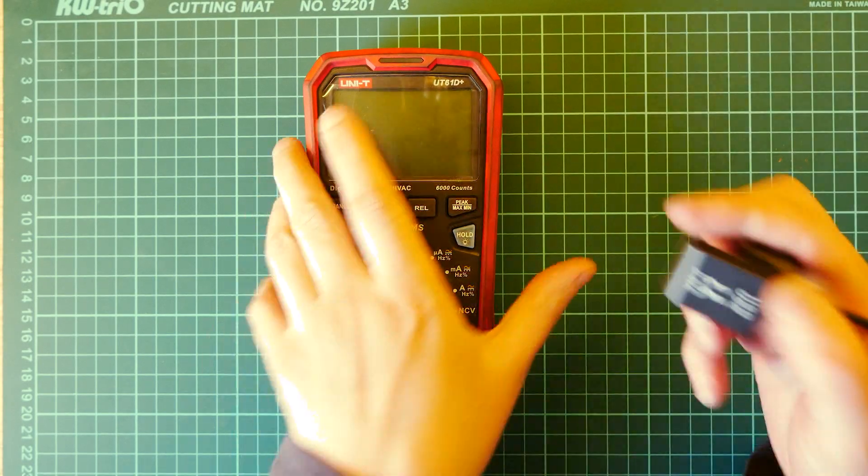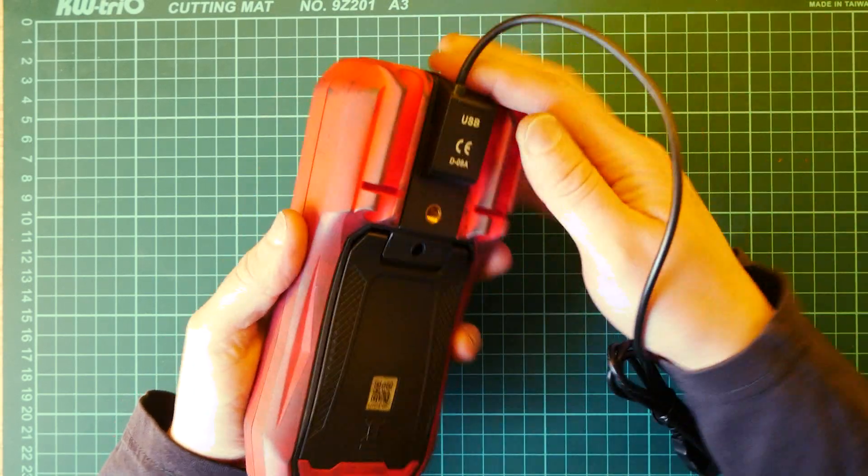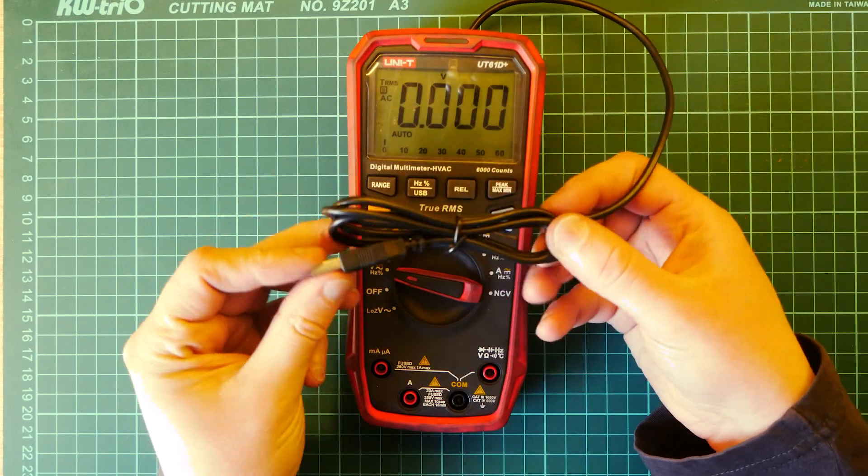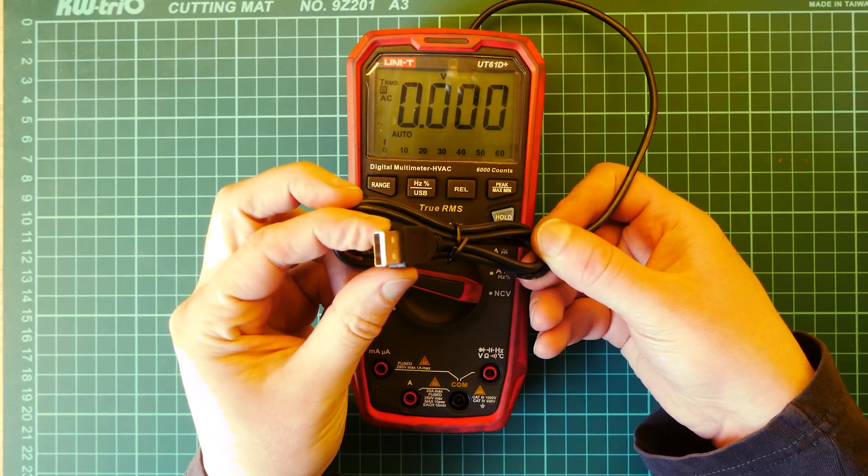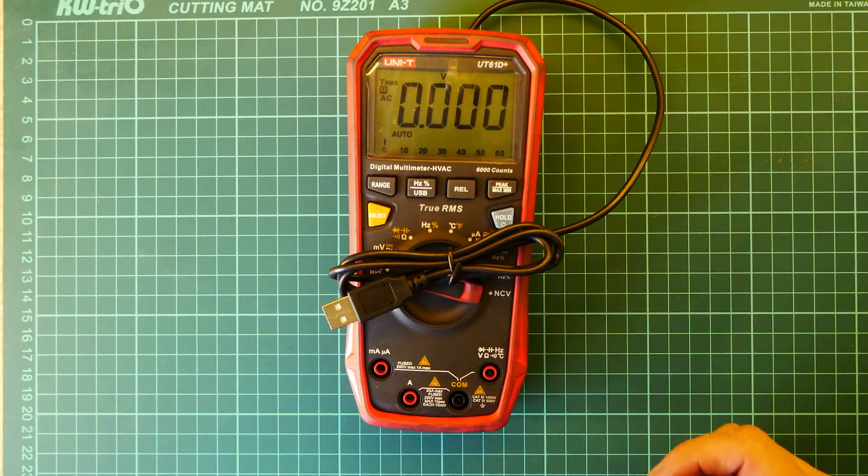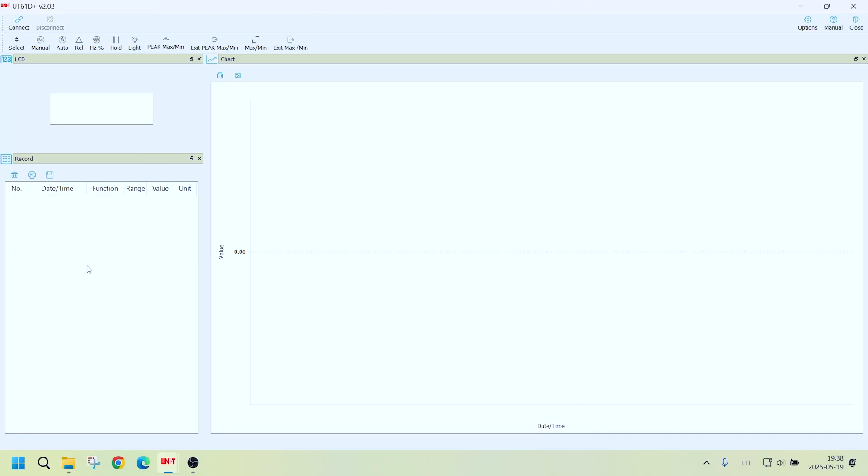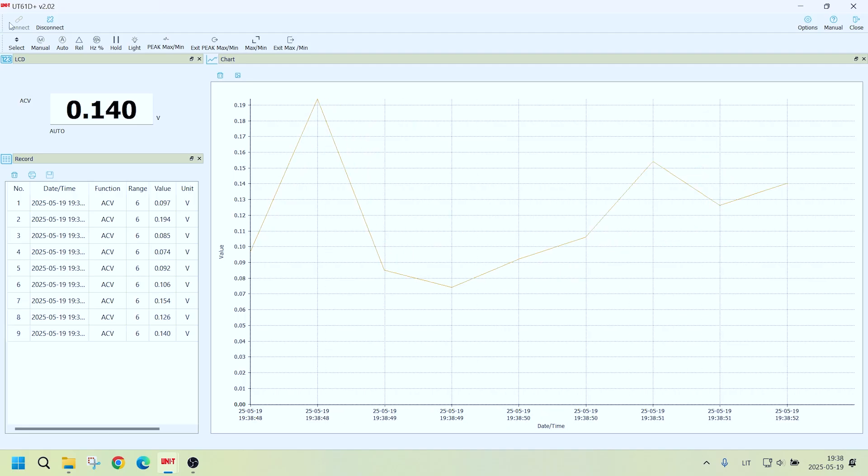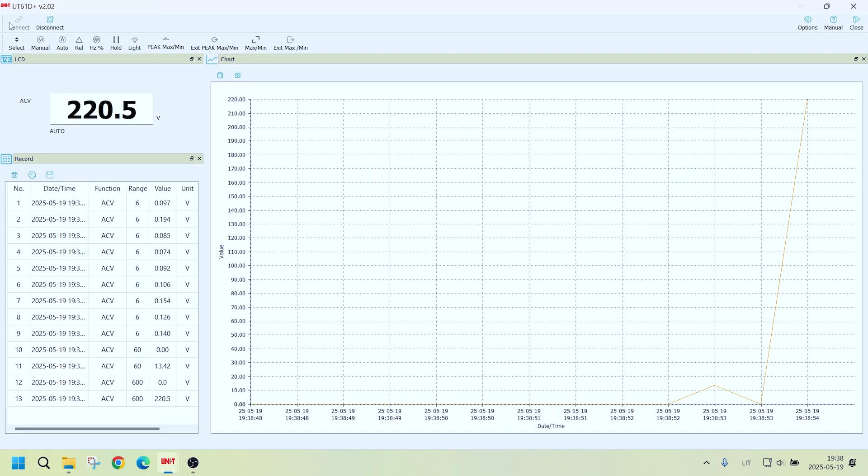Now one thing I like about this multimeter is the data logging feature. And it's quite easy to use. You just connect that, connect another end to PC, download software. You enter in Google, you know, just the model. And there you don't have to register it. Just straightforward.